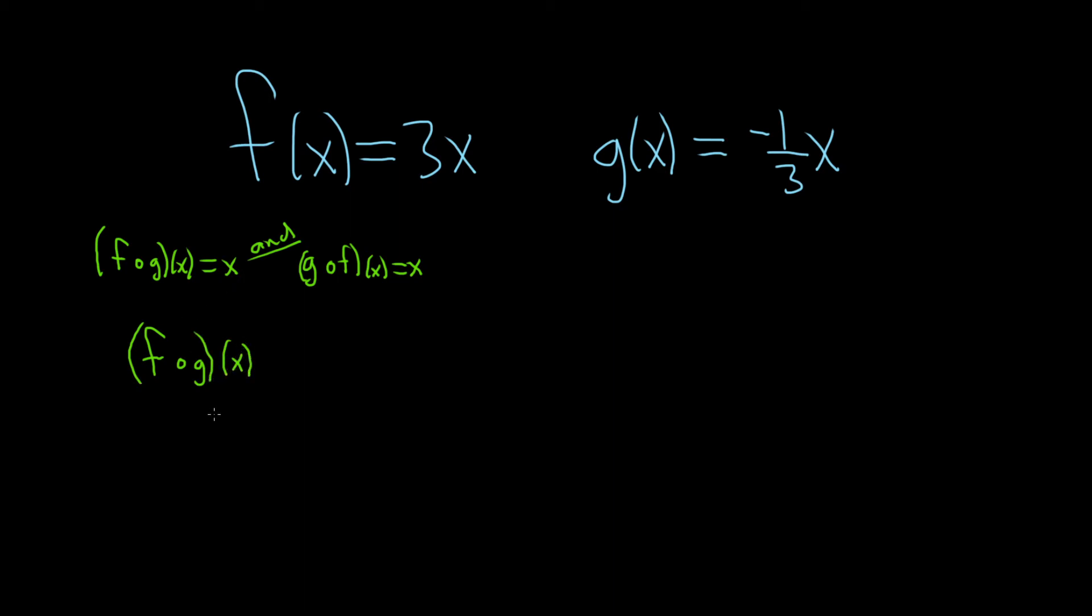So what this means is that you write it like this: f of g of x. It's written in the order that you see it, so it's f g. So this is equal to f of, and now you just replace your g. So your g is this right here, negative one-third x.